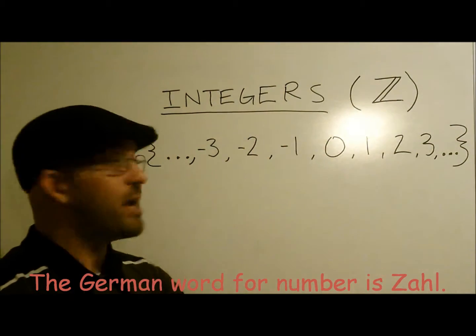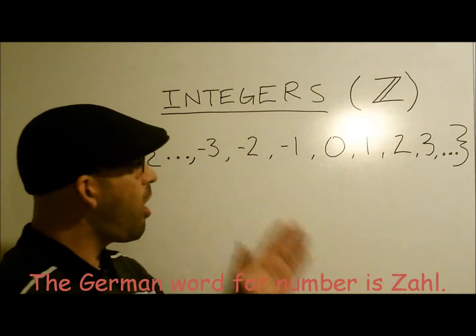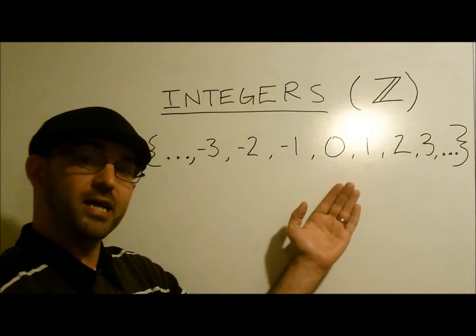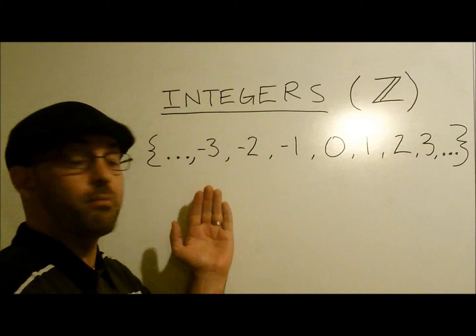Integers, signified by the large Z here, are all the whole numbers plus the negatives of the whole numbers, continued from negative infinity to positive infinity.